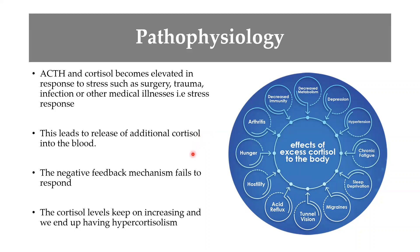The problem in Cushing's syndrome occurs when the pituitary does not respond to the negative feedback mechanism, leading to excessive ACTH production and therefore excess cortisol even when it is not needed. Normally, cortisol is released in response to stressful situations such as infection or trauma, and is then regulated as stress subsides. Without a proper negative feedback mechanism, cortisol continues to be produced, resulting in hypercortisolism.